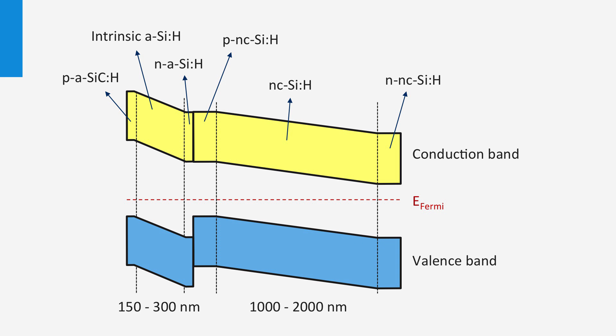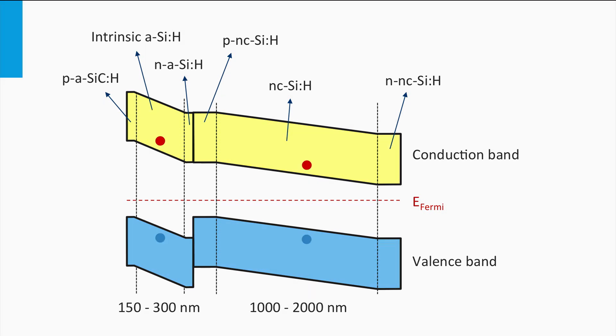Let's consider the two electron-hole pairs excited in the top and bottom cell. The hole generated in the amorphous top cell moves to the p-layer. The electron excited in the bottom cell drifts to the n-layer. Both can be collected at the front and back contacts. The electron excited in the top cell drifts to the n-layer, and the holes generated in the nanocrystalline bottom cell drifts to the p-layer.